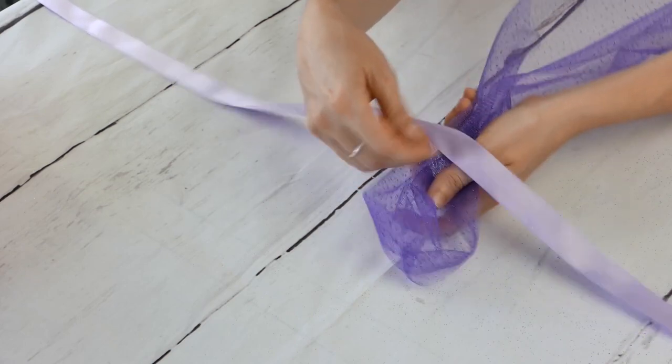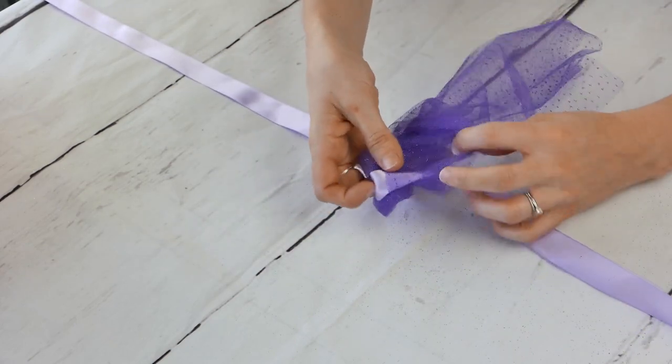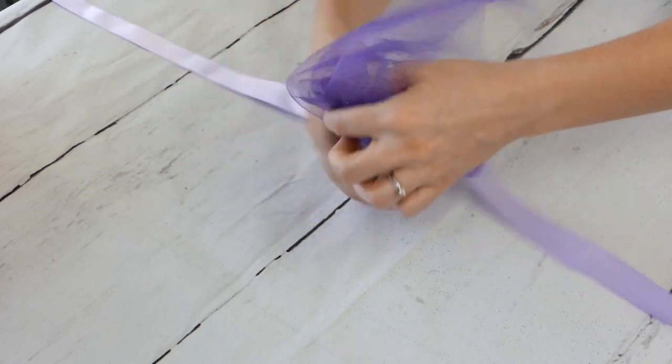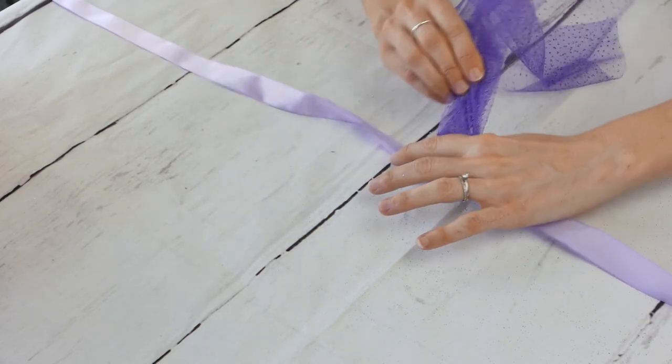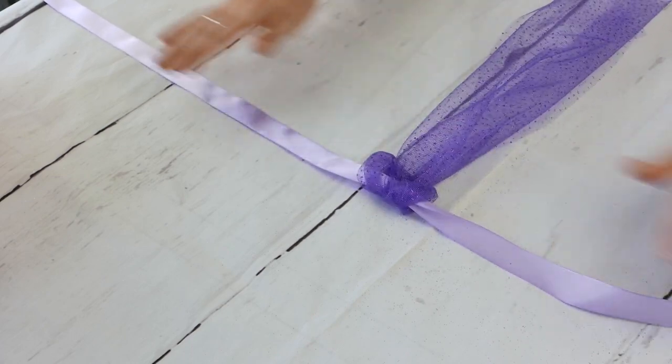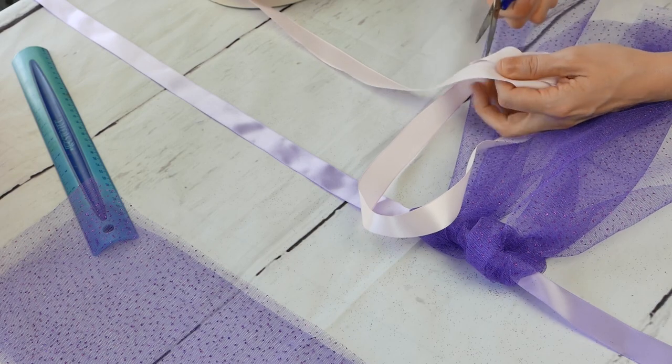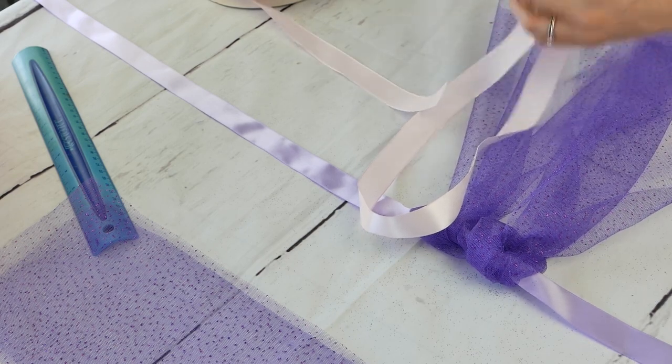Now you're going to double it up like this or fold it in half. Take that top part, fold it over that main ribbon and pull those two tails through. Now we're going to be doing this over and over again. So if you want to see that again, you can always rewind just a touch and see how we do it. But every single ribbon, every single tulle piece is going to have that same kind of motion there.